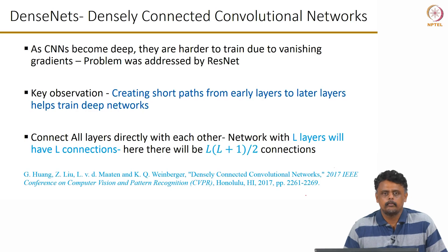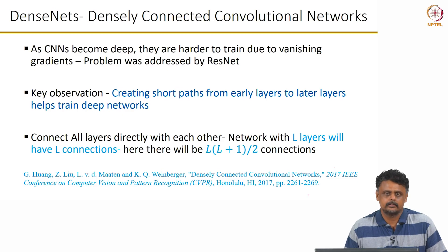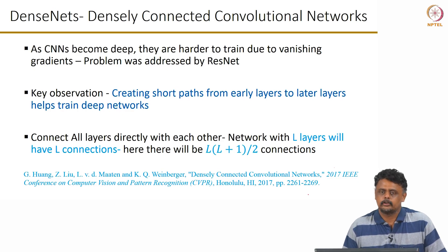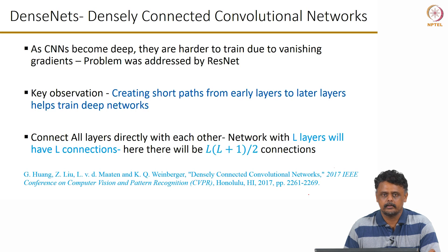In this video, we will look at DenseNets, one of the more recent architectures used in the ImageNet classification challenge that has shown exceptional performance in terms of classification accuracy despite having a fewer number of parameters.